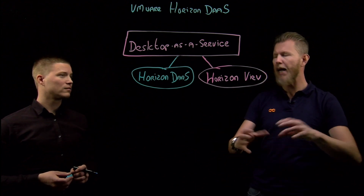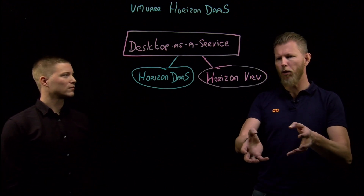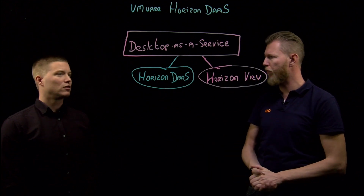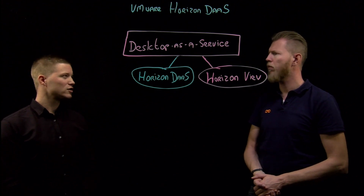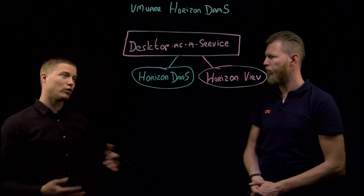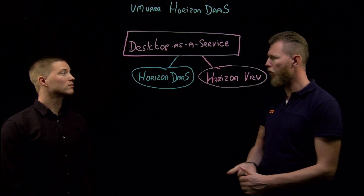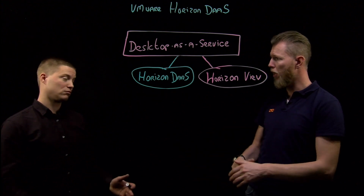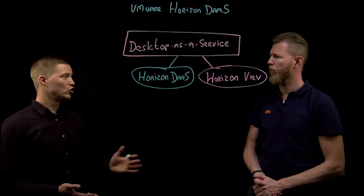Horizon View is the VDI offering from VMware, specifically for customers running on-premises or running those services from their own single data center. But DaaS is somewhat different. Horizon DaaS is the former Desktone product, bought by VMware in 2013. We can do the same things Horizon View can do, but with an extra layer in between. The feature parity — like the Blast connection protocol, instant clone or full clone desktop creation — is similar. We can also do GPUs and UEM integration.